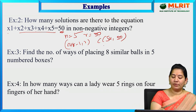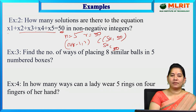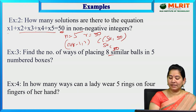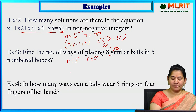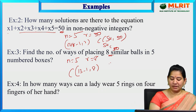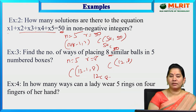Next: find the number of ways of placing 8 similar balls in 5 numbered boxes. Here n is equal to 5 and r is equal to 8. Applying the formula: C(5+8-1, 8) = C(12, 8) = 12C8 is the answer.